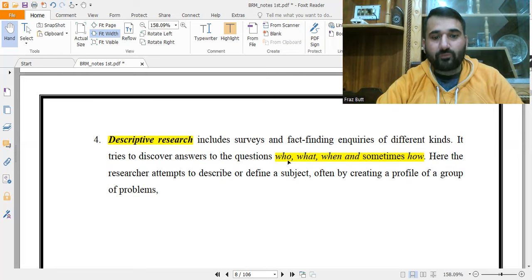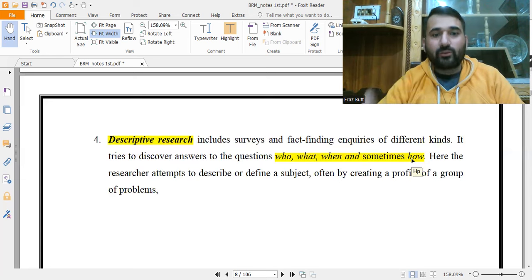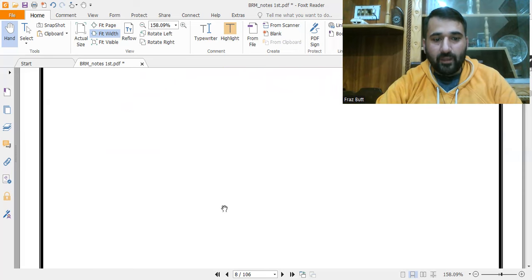Fourth is descriptive research. It tries to discover answers to the questions of who, what, when, and sometimes how. What is the problem, who is actually creating the problem, when the problem arises, how the problem arises and how it can be eliminated or mitigated. Here the researcher attempts to describe or define a subject, often by creating a profile of a group of problems. Various problems are examined and then described by answering questions like who, what, when, or how.